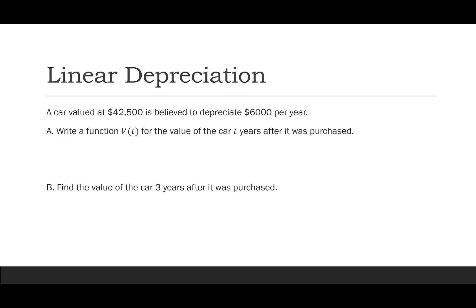Another type of linear function, we could look at linear depreciation. So let's say a car valued at $42,500 is believed to depreciate at $6,000 per year. We're going to write a function, V(t), for the value of the car t years after it was purchased. So we're going to start with V(t). Now when we're thinking like our f(x) = mx + b, we kind of look at how much does it change and where did it start. So I'm going to actually write the start first, which was $42,500. We have this value of where the car started. The depreciate infers that the value is going down. So I want to write a negative with the $6,000 and then times t to show that every year we're going to lose this amount of money.